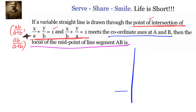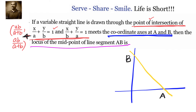Now we need to understand what the variable straight line means. Imagine all the lines passing through the point (ab/(a+b), ab/(a+b)). For each such line, find the midpoint of the segment cut between the axes. Joining all these midpoints gives the locus of the midpoint of line segment AB. Instead of drawing many lines, we take one representative line and find the locus of its midpoint.